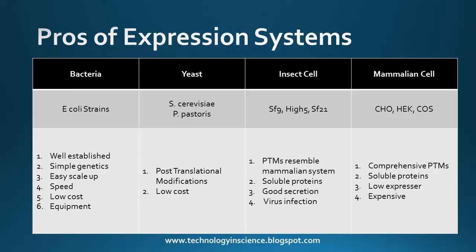Looking at the eukaryotic system, yeast is the most commonly used. The yeast cells used are Saccharomyces cerevisiae and Pichia pastoris. The advantage of yeast is that it has post-translational modification of proteins and the cost of production is relatively low.